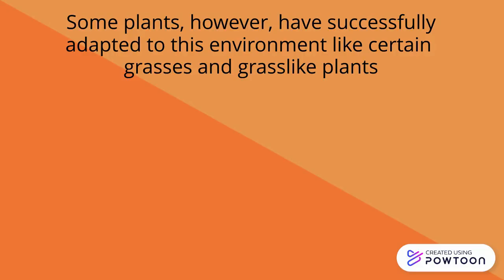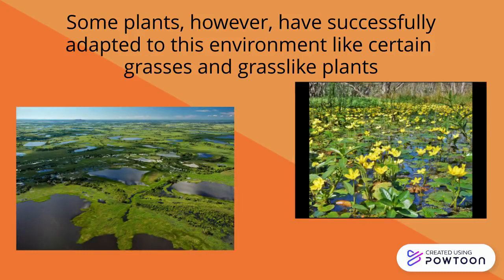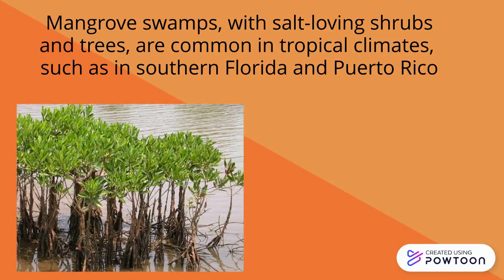Some plants, however, have successfully adapted to this environment, like certain grasses and grass-like plants. Mangrove swamps with the salt-loving shrubs and trees are common in tropical climates such as in southern Florida and Puerto Rico.